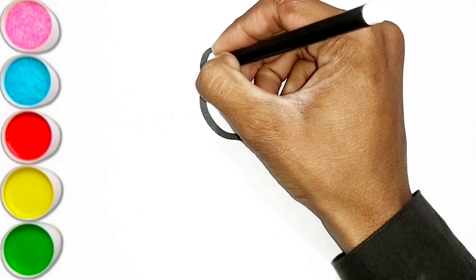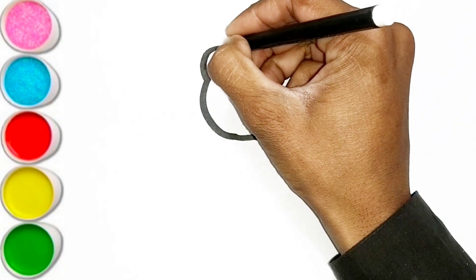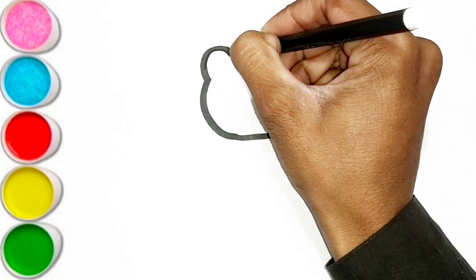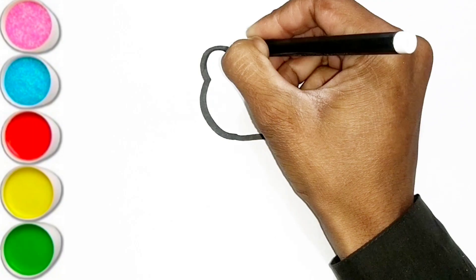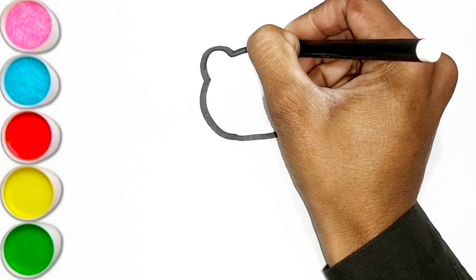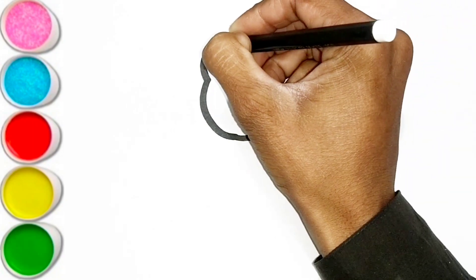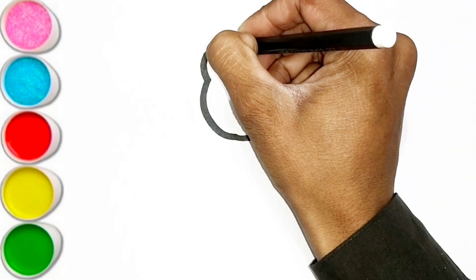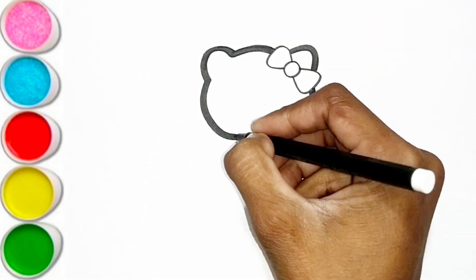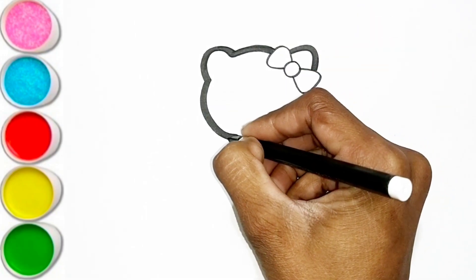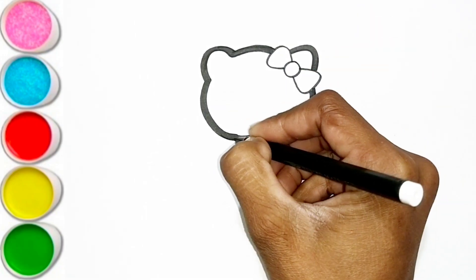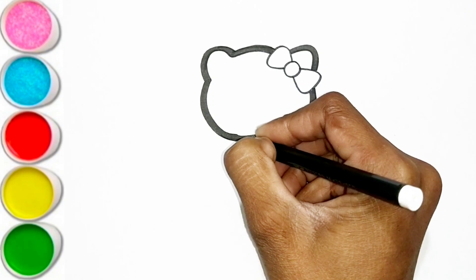M is for Mat, M-M-Mat. N is for Net, N-N-Net. O is for Orange, O-O-Orange. P is for Pet, P-P-Pet.